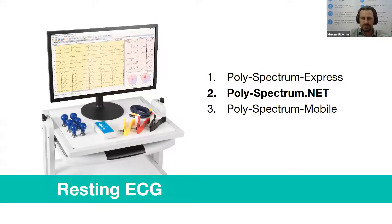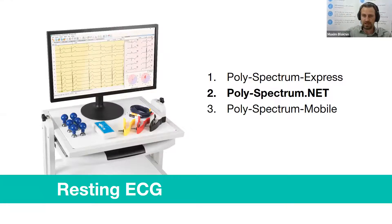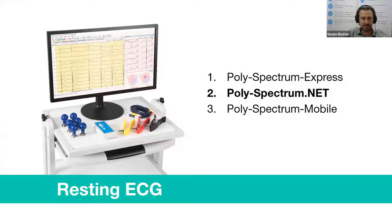As I mentioned, you can work with three types of software. The second is Polyspectrum Net. For resting ECG, its user interface is very similar to Polyspectrum Express. The main purpose of Polyspectrum Net is stress testing, and my colleagues will tell you about stress testing a little bit later.